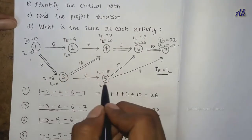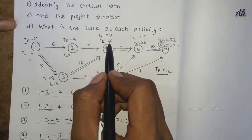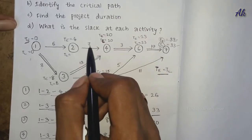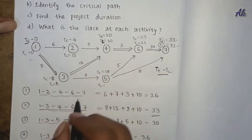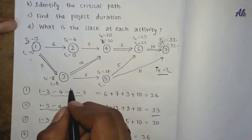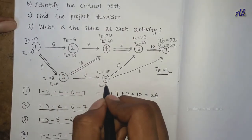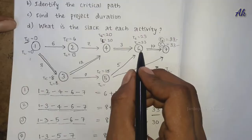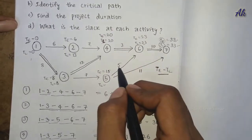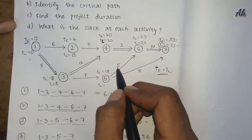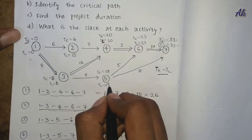For TL calculations of events 2 and 5: TL for event 5 is 23 minus 5 equals 18. We take the minimum value when multiple paths converge at an event.